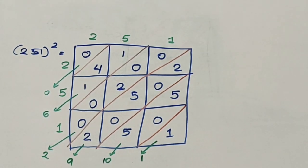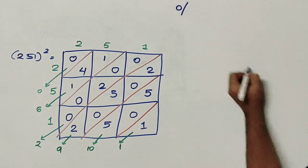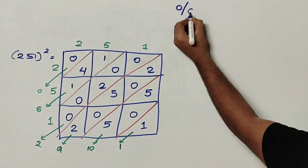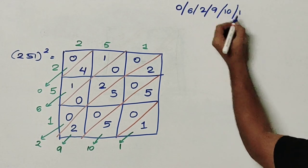So let us try to write what we have got. This gives me 0, 6, 9, 10, and 1.